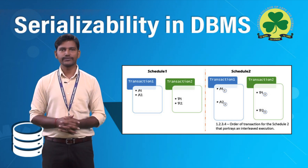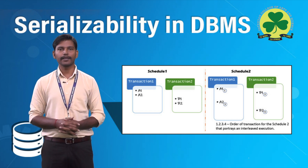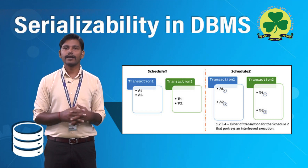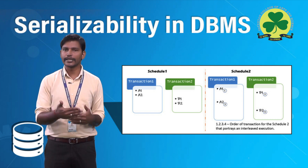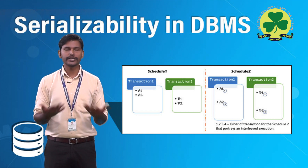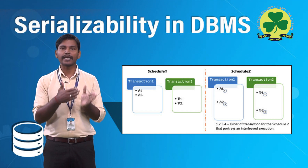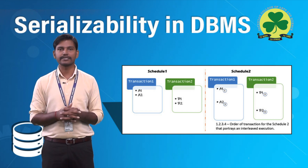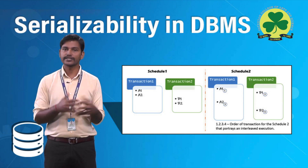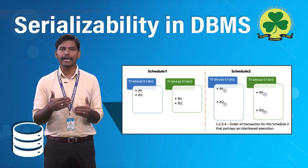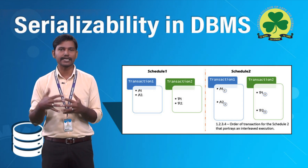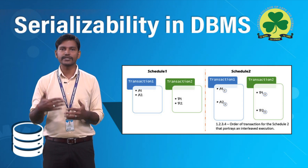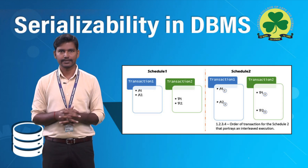To achieve serializability, we need to follow an order — we need to follow a schedule. A schedule is a chronological execution sequence of transactions. A schedule can have many transactions in it, and each comprises a number of instructions or tasks.